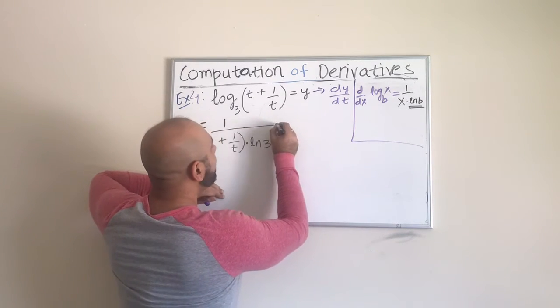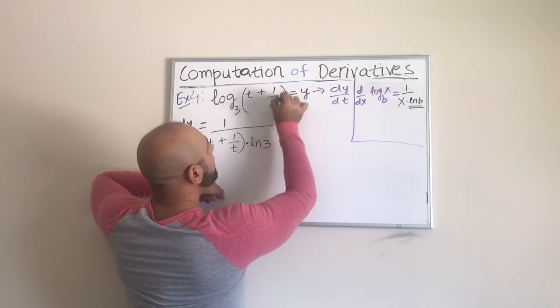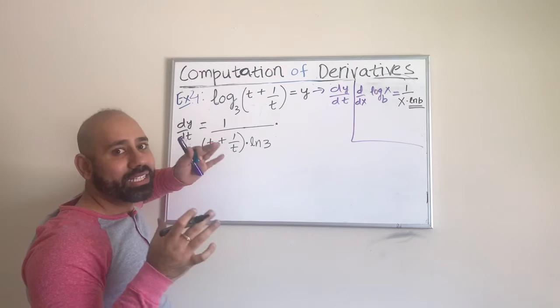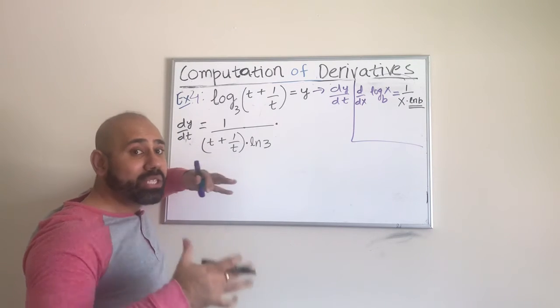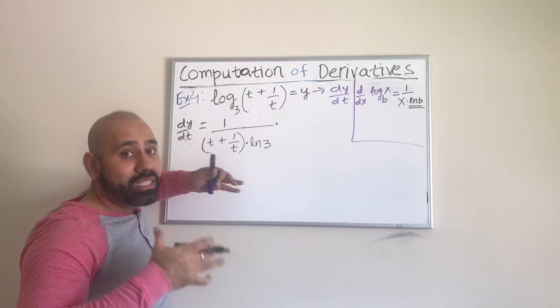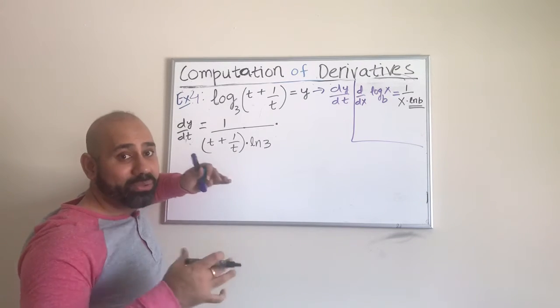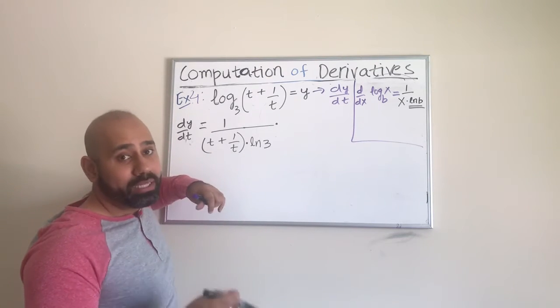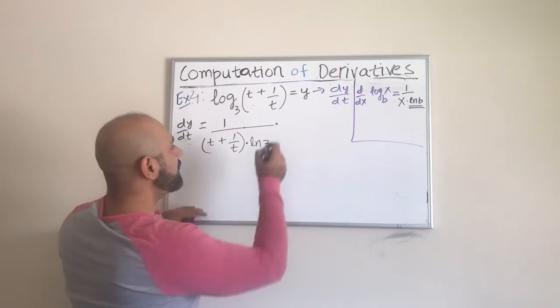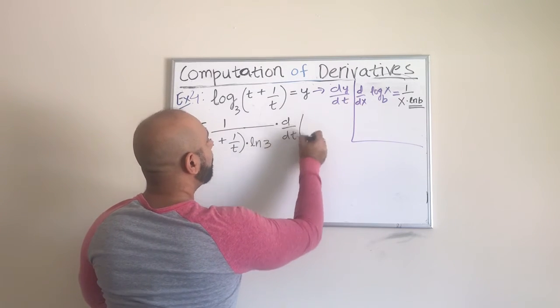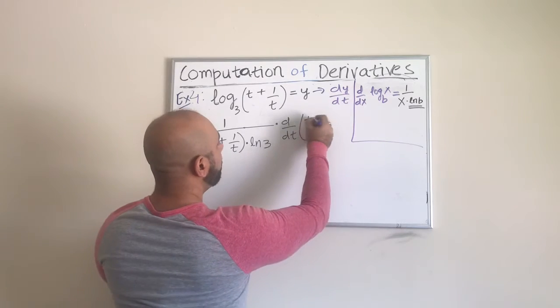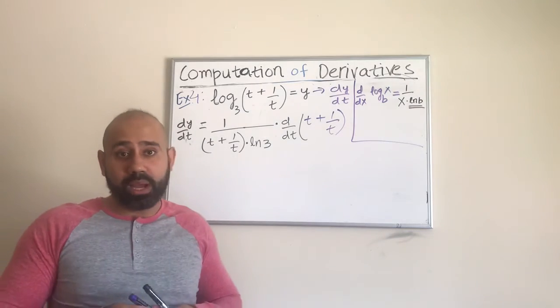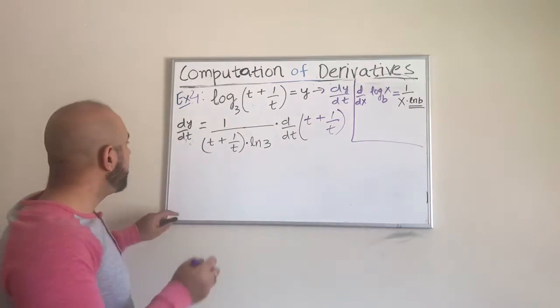But we cannot still stop right here because this is not just an x or a t. It is more than an x. Whenever this inside function, inside the parentheses is something more than an x or a t in this case, it means it's a composition, it's a composite function. And whenever we have a combination of functions, we already know that we have to use the chain rule, which means you have to multiply by the derivative of the inner. So in this case, you just have to multiply d over dt of this t plus 1 over t. This is a very important step here. But this is nothing really special. It is just for doing the chain rule, which we have been doing now for some time.